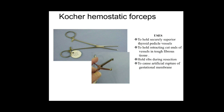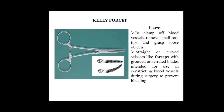The next one is Kelly's forceps. The tip of Kelly's forceps is used to clamp off blood vessels, remove small root tips, and grasp loose objects. It can be used like scissors with grooved or serrated blades, intended for use in a constricted area. When there is a constricted blood vessel, Kelly's forceps can be used to prevent bleeding. Following that is the Halstead mosquito forceps, another type of forceps used as a hemostatic agent to compress small blood vessels and regulate blood flow. These forceps contain ratchets and ring handles to ensure a tight clamp — the lock helps maintain the tightness as needed.